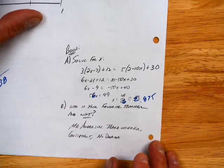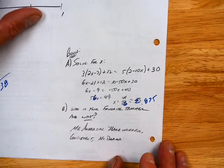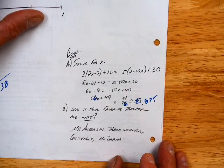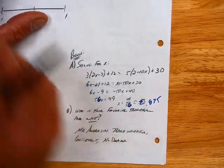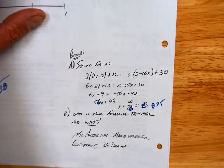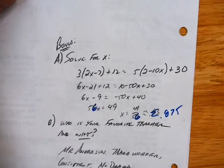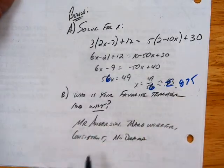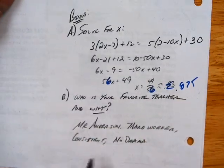Bonus A — that would be 7 eighths, or 0.875. Some of you folks did better than I did. I made a silly mistake — I took 50 plus 6 and got 59.